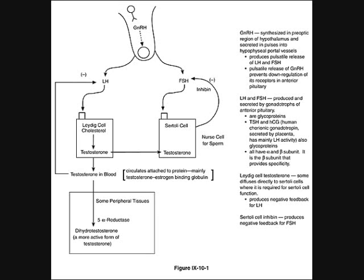What you need to know from this graph is that GnRH originates in the preoptic region. It secretes in pulses, going to the anterior pituitary and producing LH — the luteinizing hormone — and FSH — the follicle-stimulating hormone. There is a pulsatile release that prevents down-regulation of the receptors.